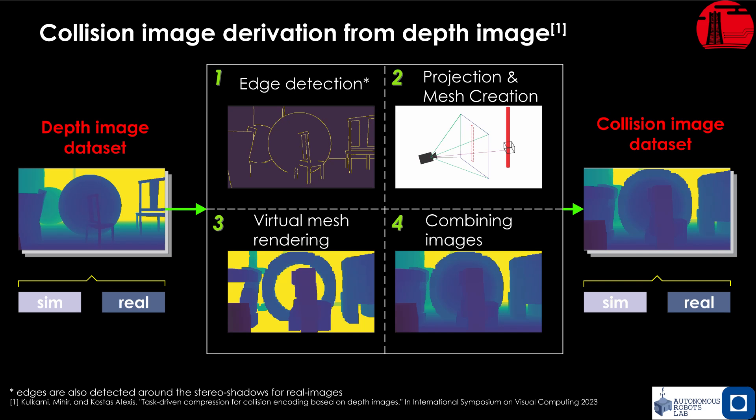This approach provides a direct understanding of regions that can be traversed by the robot, as a depth value at each pixel would indicate the collision-free distance that can be traversed in that direction.